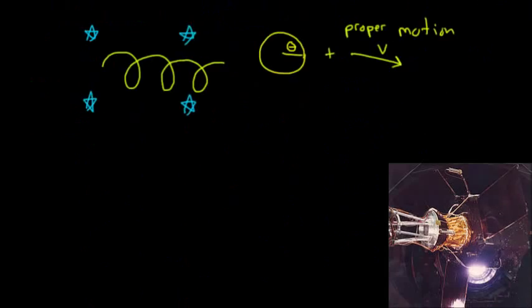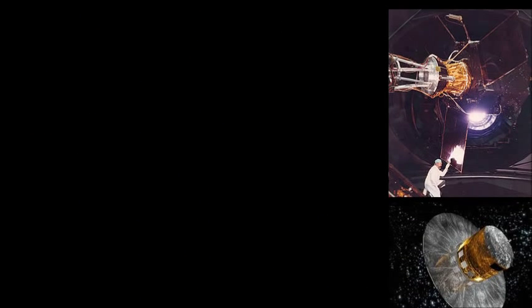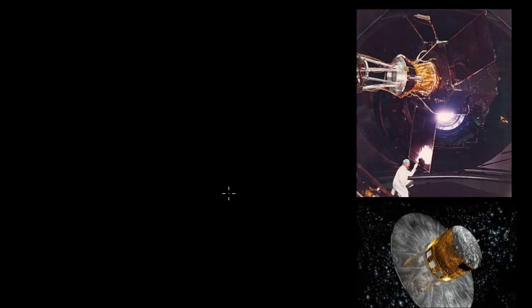So the only way to really overcome this is to observe these stars from outside of our atmosphere, from space. So this leads us to a couple of satellite missions that were done. So in 1989, the Hipparcos satellite, which is pictured here, was launched.